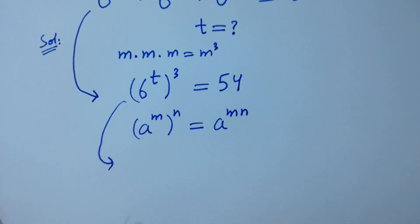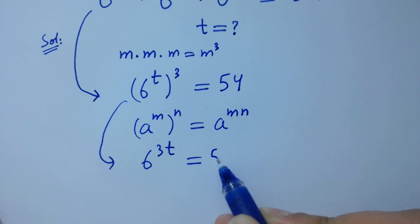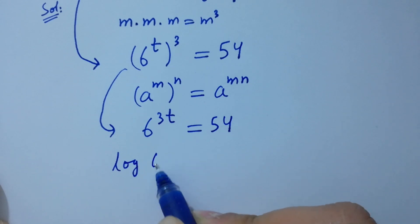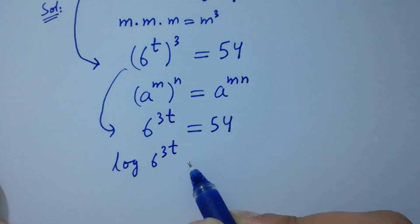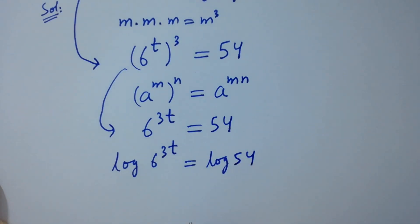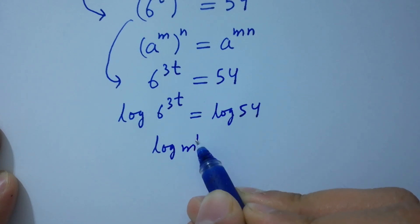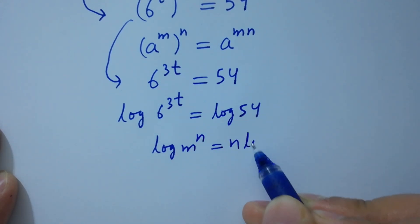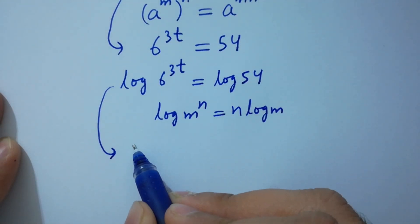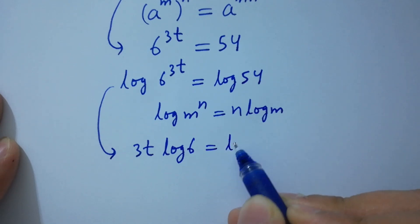We have 6 to the power 3t equal to 54. Taking log on both sides: log of 6 to the power 3t equals log 54. As log m to the power n equals n log m, we get 3t log 6 equals log 54.